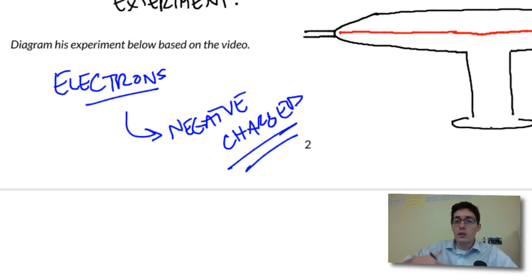There was another experiment that showed that there was a different part of the atom that was positively charged. So all of these experiments together kind of led to our understanding of the atom today.